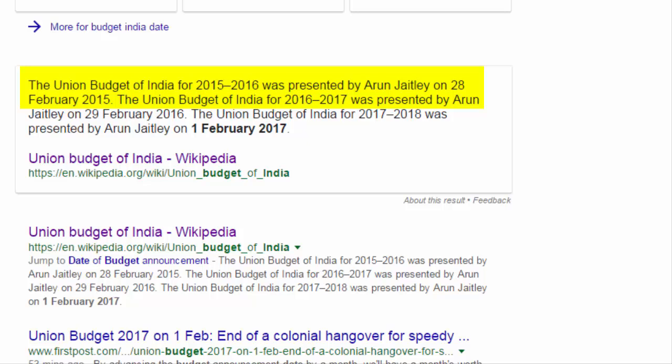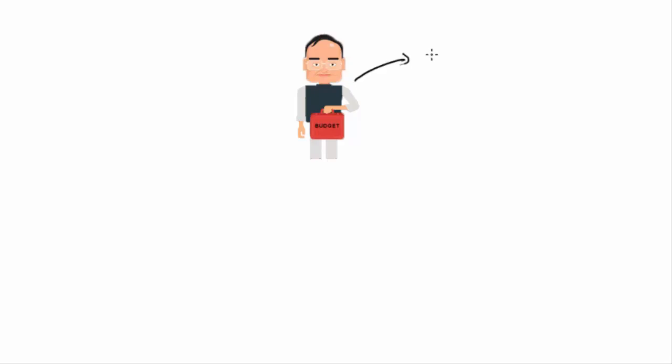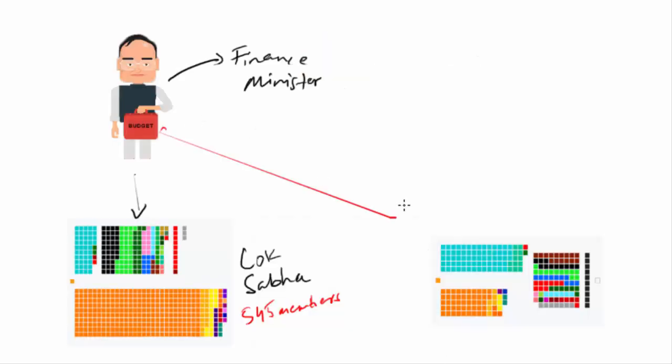This time, the government of India decided to present the budget on the first day of February. Otherwise, till 2016, it was presented on the last working day of February. The whole idea is to present the budget on the first day of February and make it come into effect from April 1, because April 1 is the start of India's financial year.